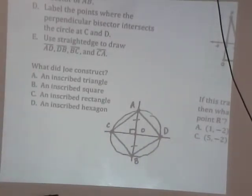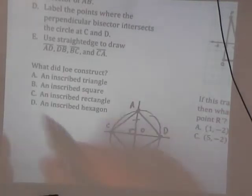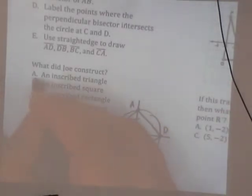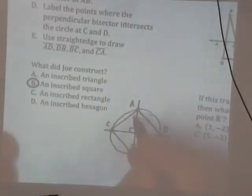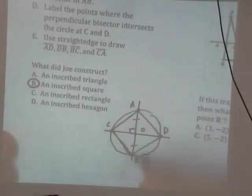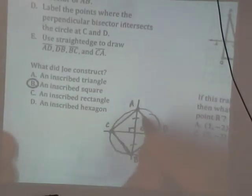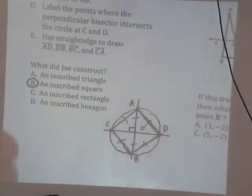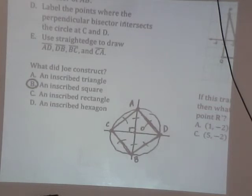What did Joe construct? An inscribed triangle, an inscribed square, an inscribed rectangle, or an inscribed hexagon? Triangle. Hexagon. An inscribed square. All each of these sides would be the exact same thing. Questions on that one? Are we okay?